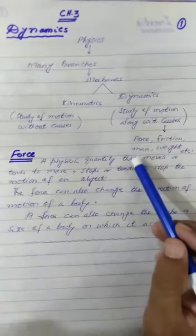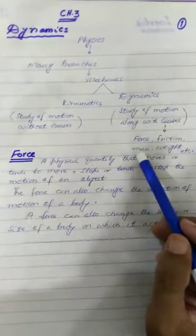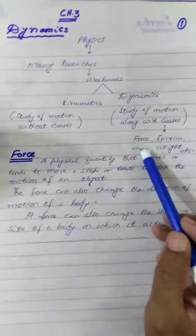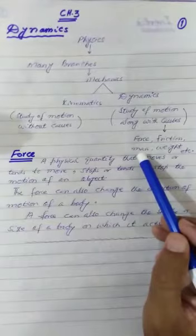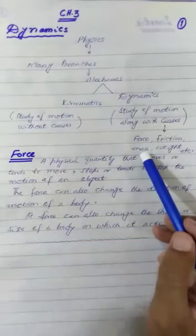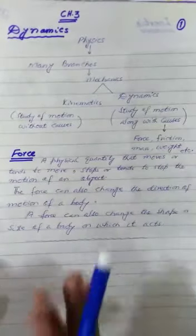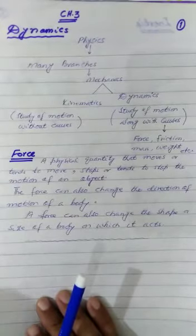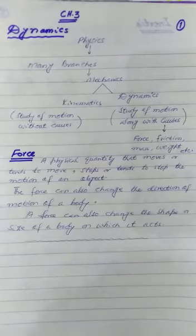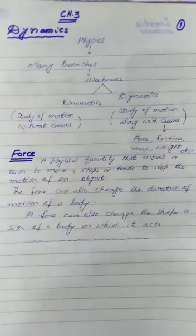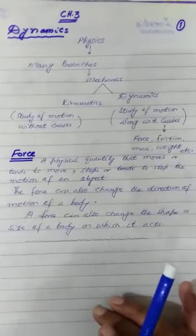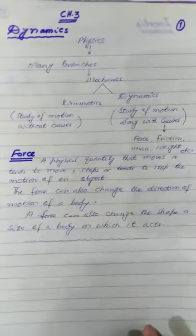Mass: if you increase the mass of an object, there will definitely be an effect on its motion. For example, if you are pulling a trolley that is empty, you can easily move it with a particular velocity and speed. But if you fill that trolley with different objects, as you increase the mass, you will find it more difficult to pull the cart in a particular direction, because the velocity or speed of that trolley will be affected.